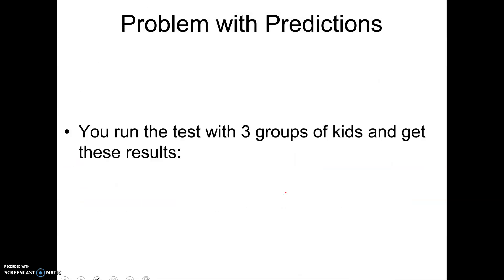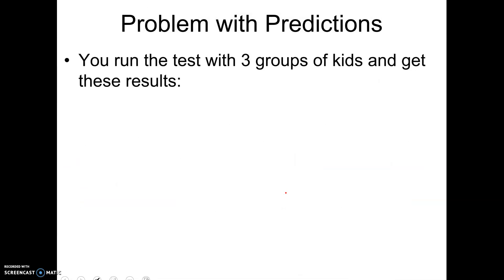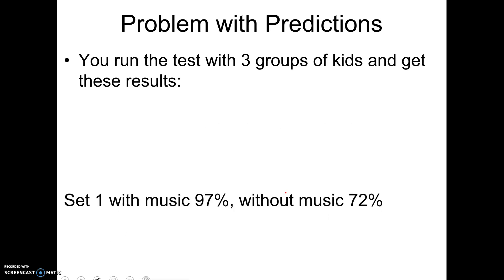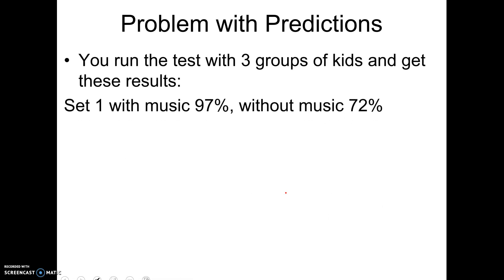There is a problem with predictions. Let's say we run our test and the ones who listen to music have an average test score of 97, while those who don't listen to music have an average of 72. Most people in class agreed they would probably conclude music helps those students study for the test.